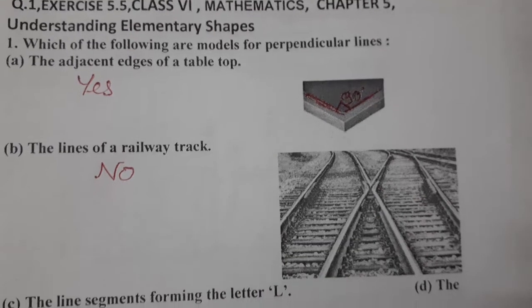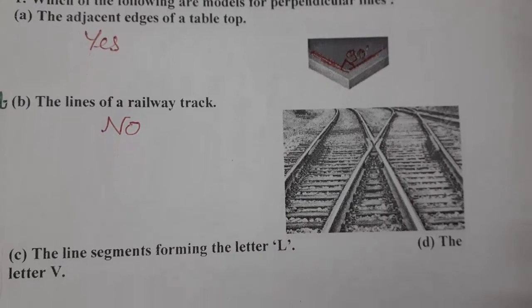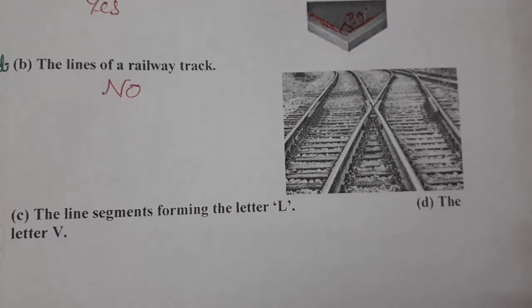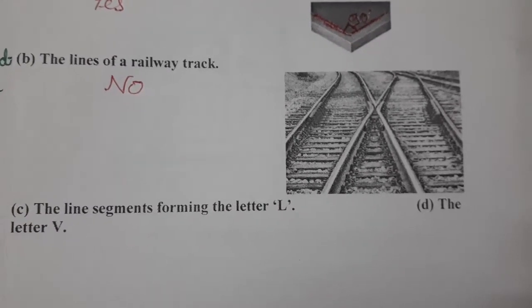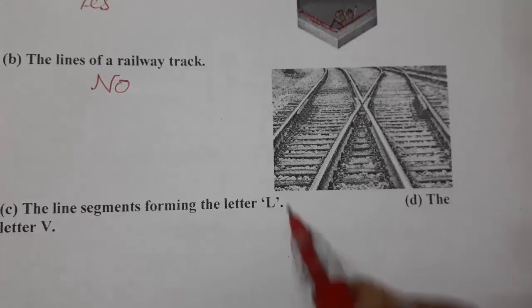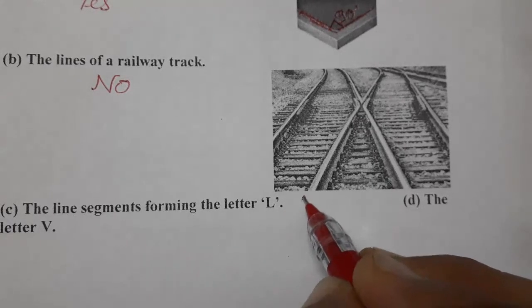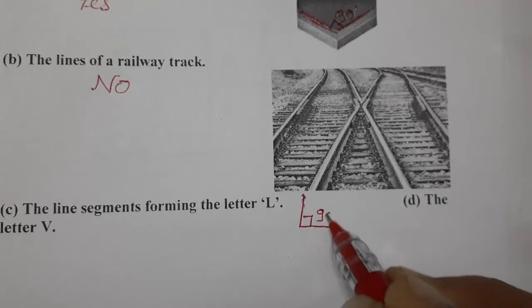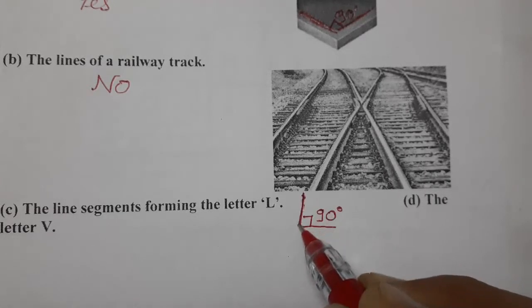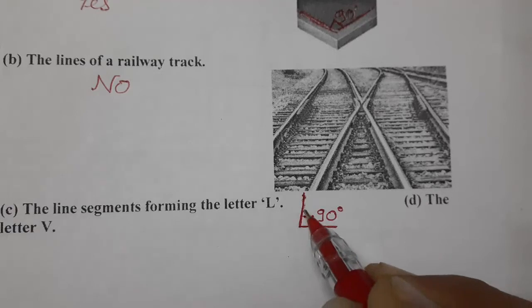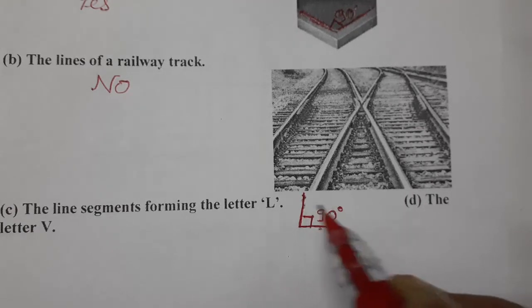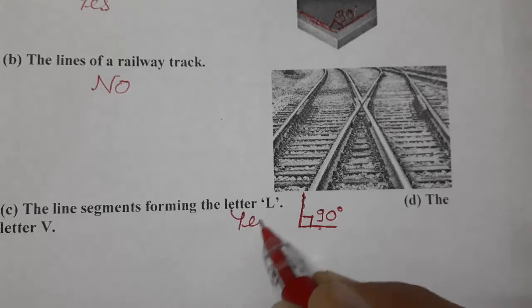Third one, the line segments forming the letter L. So letter L, this is given to us, letter L. Yes, they are making an angle of 90 degrees. This is 90 degrees, perpendicular to each other. This line is perpendicular to this one and this one perpendicular to this one. So for letter L, it is yes.